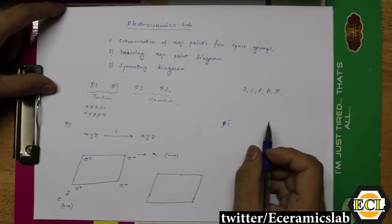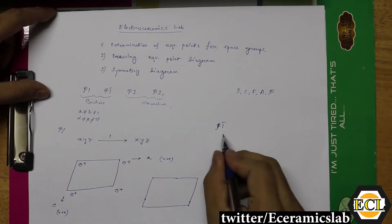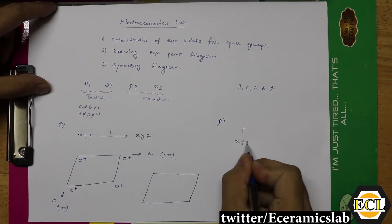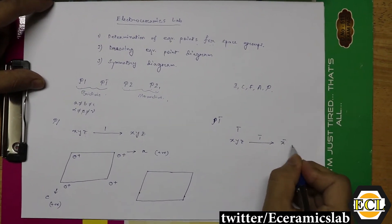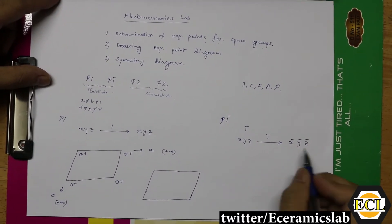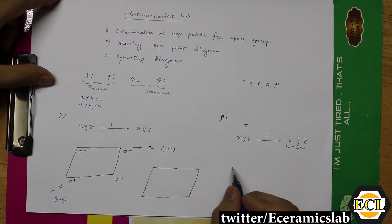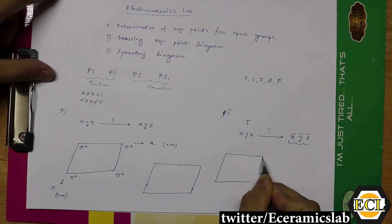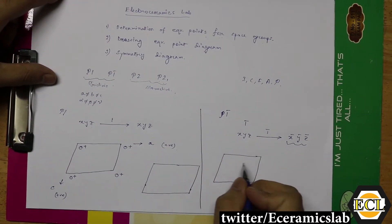Next is the P1-bar space group. Again we follow the determination of equivalent points for the space group. Here the symmetry is 1-bar. If we consider a point XYZ and apply the 1-bar symmetry operation, we get the resultant point X̄ Ȳ Z̄.